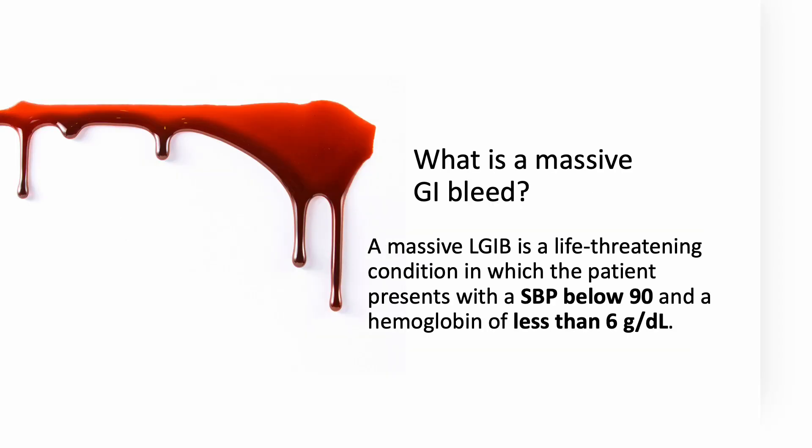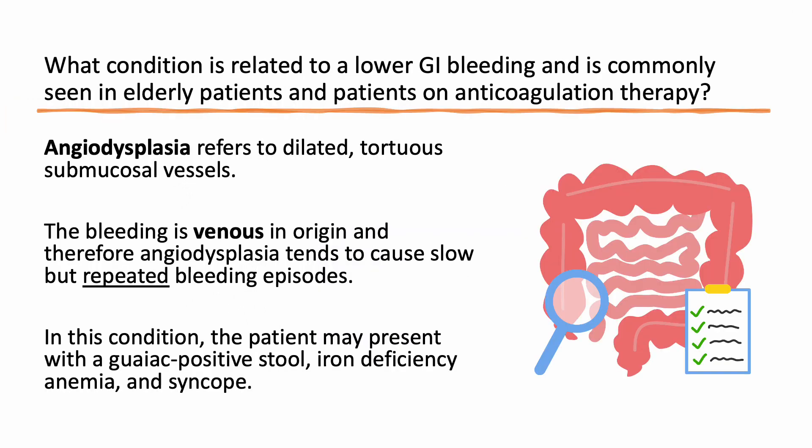What is a massive GI bleed? A massive lower GI bleeding is a life-threatening condition in which the patient presents with a systolic blood pressure below 90 and a hemoglobin of less than 6.